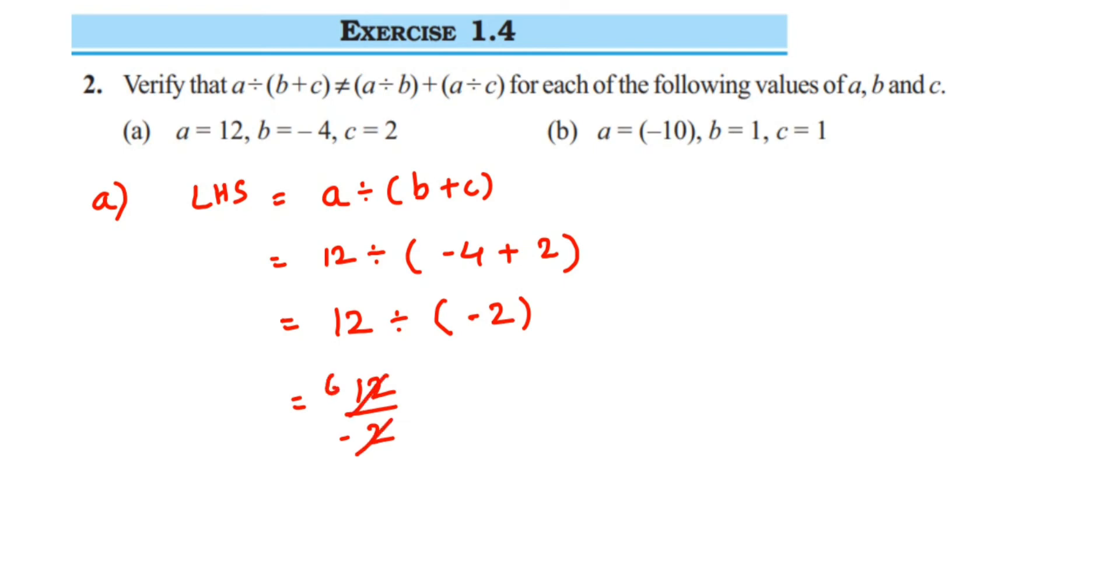So you're going to get the answer 6/(-1) or you can directly write down -6. Both answers are equal. So don't say this answer is wrong because I have kept the negative sign in the denominator. Remember, the whole integer is negative no matter where you put the negative sign because they are equivalent. Then the RHS part.